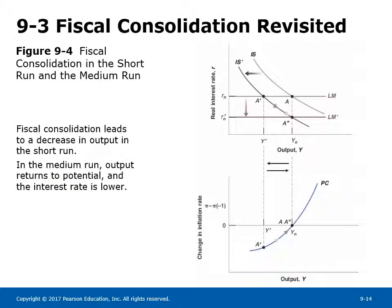Section 9-3: Fiscal Consolidation Revisited. Figure 9-4 shows the impact of fiscal consolidation in the short run and the medium run. The IS curve shifts left due to contractionary fiscal policy, causing output to fall from Y_N to Y' and investment to fall. As output falls below potential, change in inflation becomes negative. The Fed lowers the nominal rate to reduce the real policy rate; the LM curve shifts down until output returns to potential. Investment increases in the medium run since output has returned to its previous level while the real interest rate is lower.